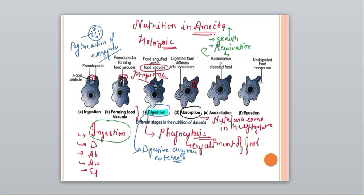On assimilating the food, amoeba grows in size. The absorbed food is used in growth and respiration. On assimilating the food, amoeba shows growth and then reproduction, because in unicellular organisms growth is synonymous with reproduction — when they attain a certain size they divide. So on assimilating food, amoeba shows growth and reproduces.